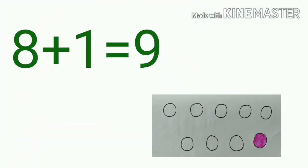Here you can see, out of 9 circles, one circle is shaded and the remaining 8 circles are unshaded. So we can add 8 plus 1 is equal to 9.